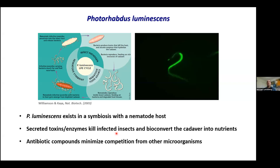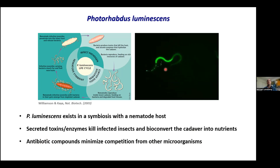The reason angel's glow was associated with a relatively good prognosis for surviving war wounds is that P. luminescens exists in a unique symbiotic relationship with a nematode host. The nematode sources food by killing an insect — secreting the bacterium into the gut of a susceptible host — and that bacterium in turn secretes toxins to convert the cadaver into nutrients. P. luminescens also secretes antibiotic compounds to minimize competition from other microorganisms, while the cadaver provides a food source for both the bacterium and nematode to reproduce.